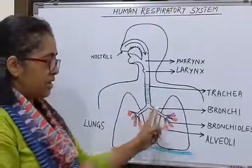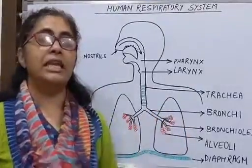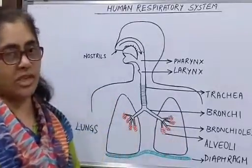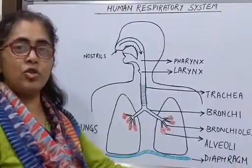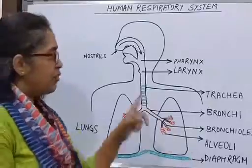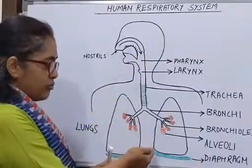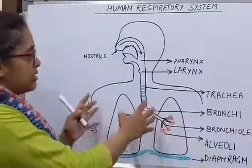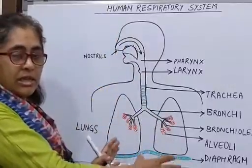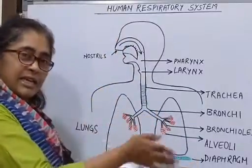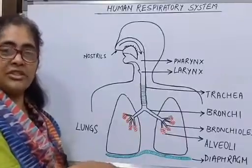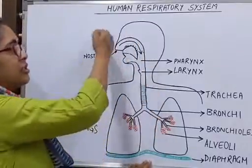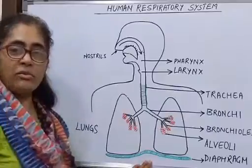The alveoli are enclosed within the lungs, which are elastic structures that expand and contract based on the movement of the diaphragm. The diaphragm is a dome-shaped muscular structure. When we inhale, the diaphragm moves down, flattening itself and creating a vacuum, causing a rush of air into the lungs. During exhalation, the diaphragm moves up and deflates the lungs, so air rushes out.